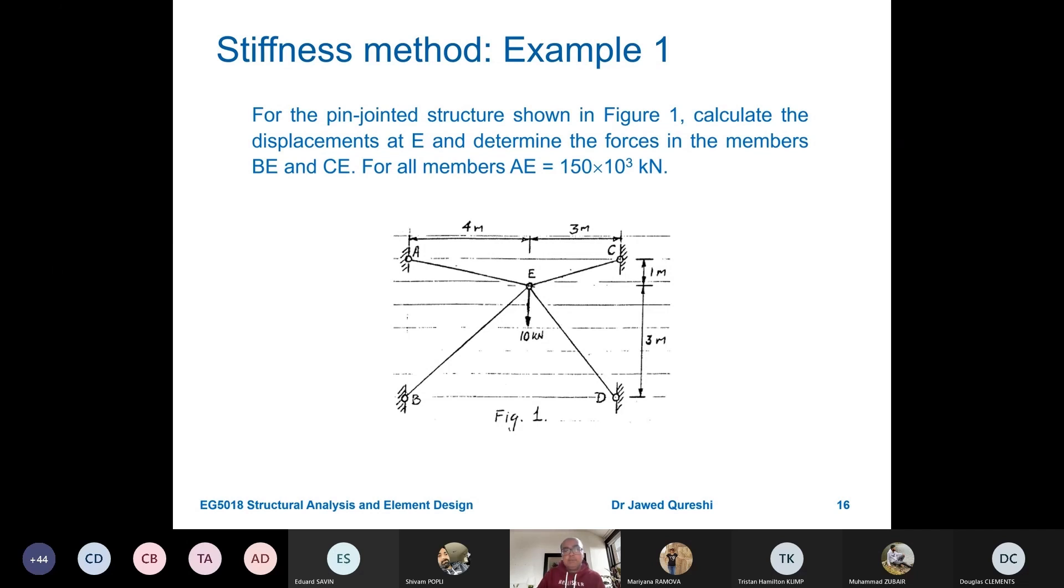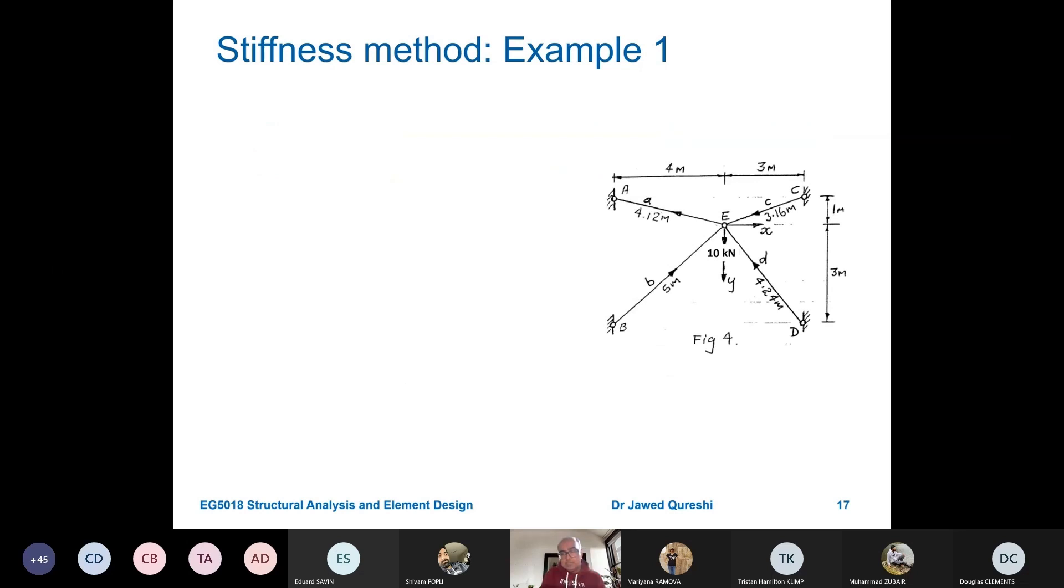Joints are numbered. We have to number the elements or members and we have to give arrows. You will choose that arrow on arbitrary basis. A to E, I have named this member as small a. From C to E, I have named this member as C. From B to E, the name of member is B and from D to E, the name of member is D. This is the direction of global axis. Matrices will follow the same sign convention. X is positive rightwards and Y is positive downwards. This is my assumption. You could say that X is positive rightwards and Y is positive upwards. You will still get the same answers.